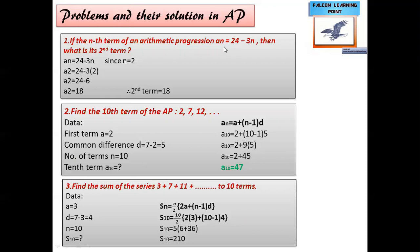The first question: if the nth term of an AP, represented as a_n, is equal to 24 minus 3n, then what is the second term? You have to look at the equation a_n = 24 minus 3n. To find the second term, substitute n = 2. You will get the answer as 18. So the second term is 18.